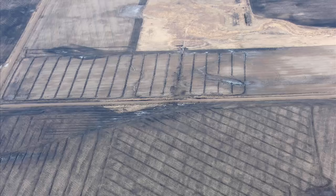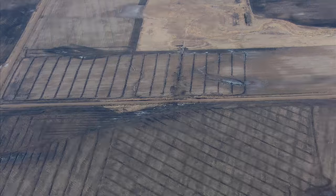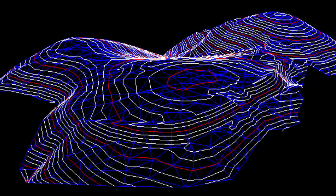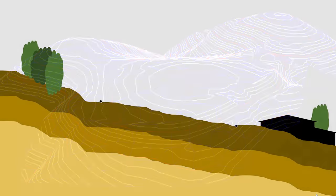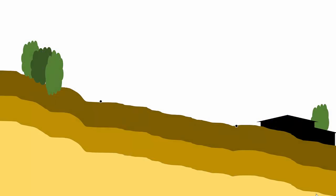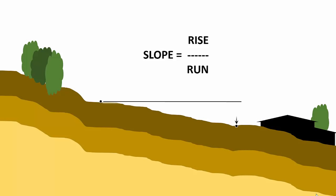We pay close attention to surface slope to produce efficient, reliable systems. You learned that slope is a ratio of rise over run. Rise is a change in elevation — that is, a vertical distance — and run is a horizontal distance.